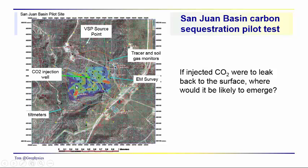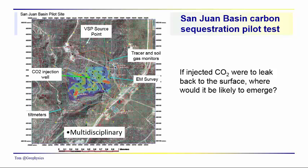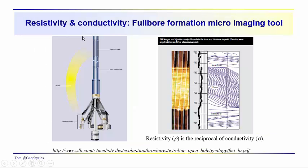There were several different kinds of geophysical experiments conducted on the site: the electromagnetic survey, tracers, soil and slow gas monitors, vertical seismic profiles, 3D seismic data, and tilt meters — all designed to see what would happen as CO2 was injected into a deeper formation. Much of the work was to determine if CO2 did escape where we might position our tracers and where we might expect CO2 to come back to the surface. It was a multidisciplinary effort.